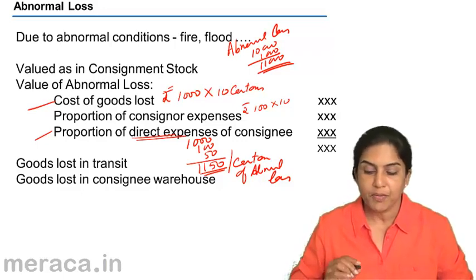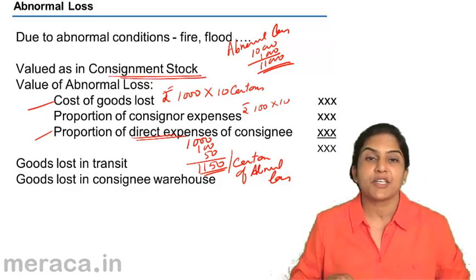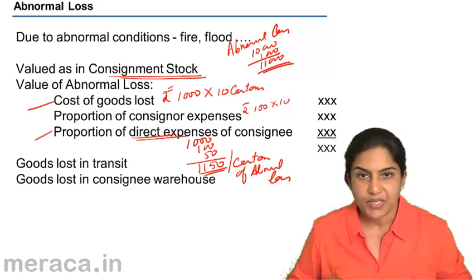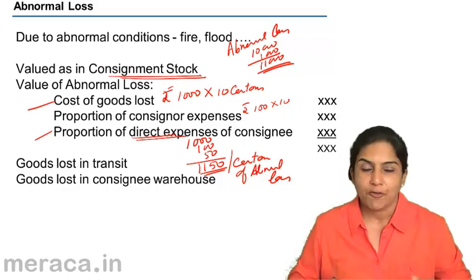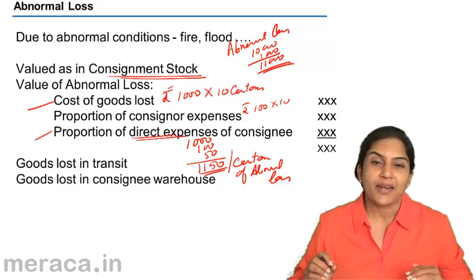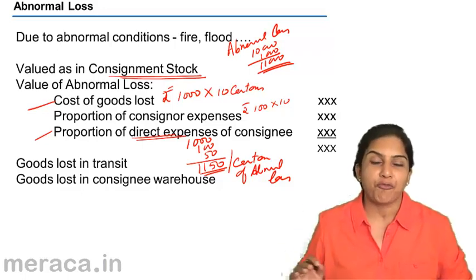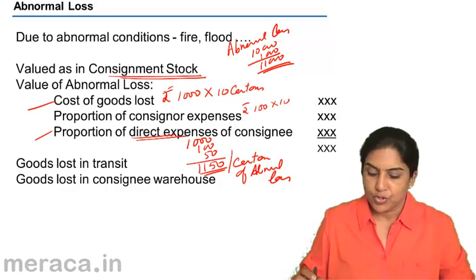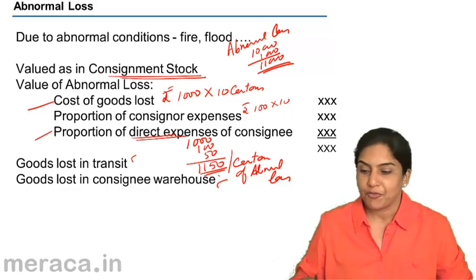Abnormal loss is actually valued in the same manner as consignment stock. What is added? The purchase cost, the proportion of the consigner's expenses, and the proportion of the direct expenses incurred by the consignee. Of course, it depends on where and at what stage the goods are lost — if expenses are incurred after the loss, they are not added when valuing abnormal loss.